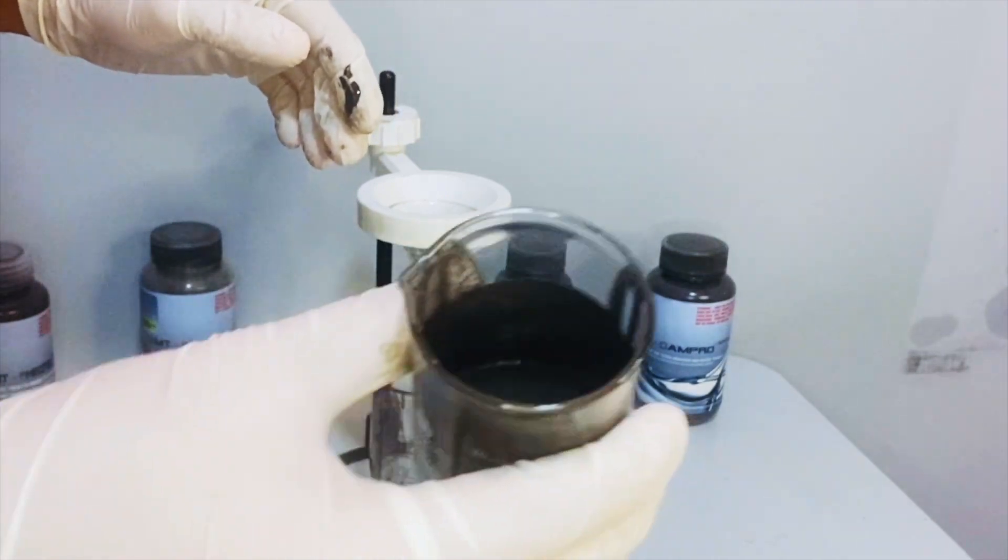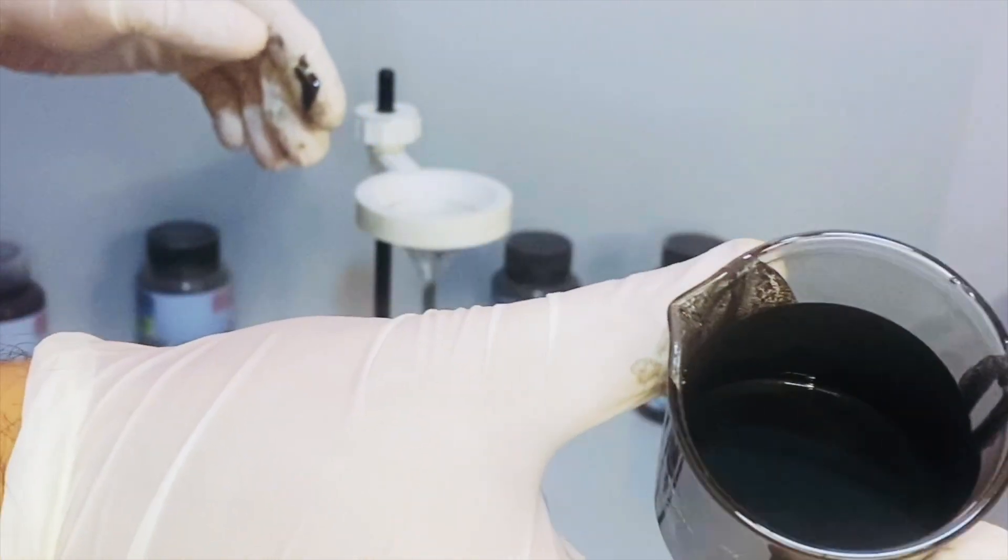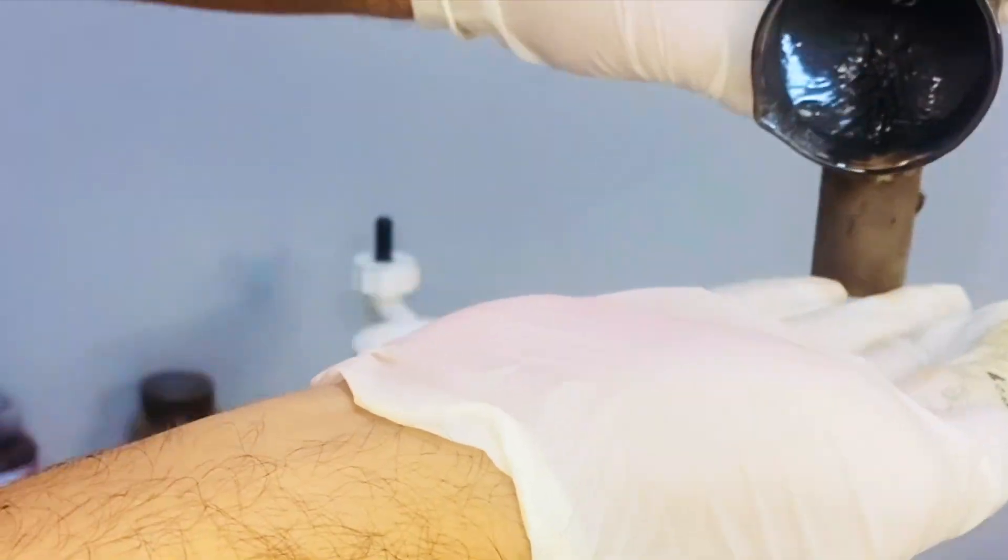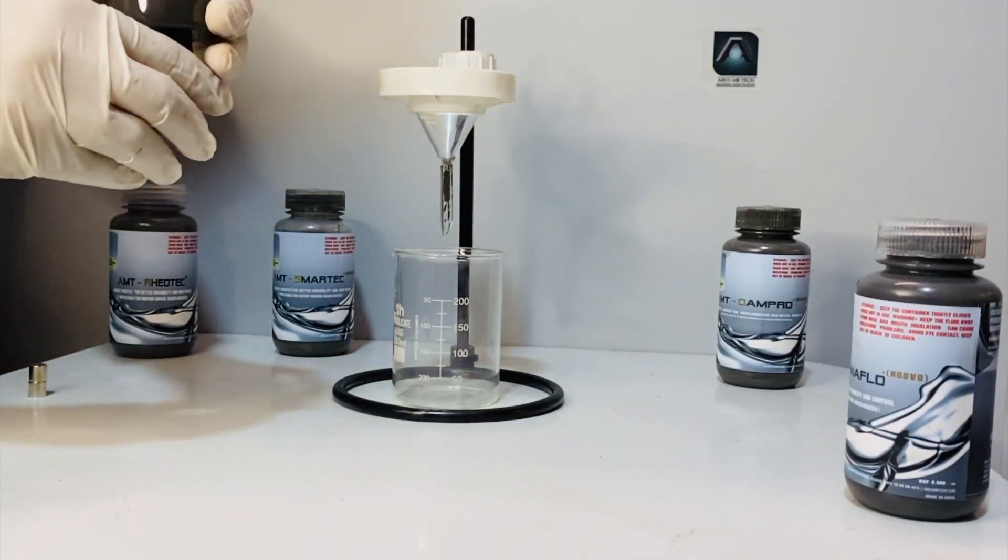Now I will bring a magnetic field by placing a permanent magnet and here you go, the fluid instantaneously changes its viscosity to that of a semi-solid. It has almost become a metal.